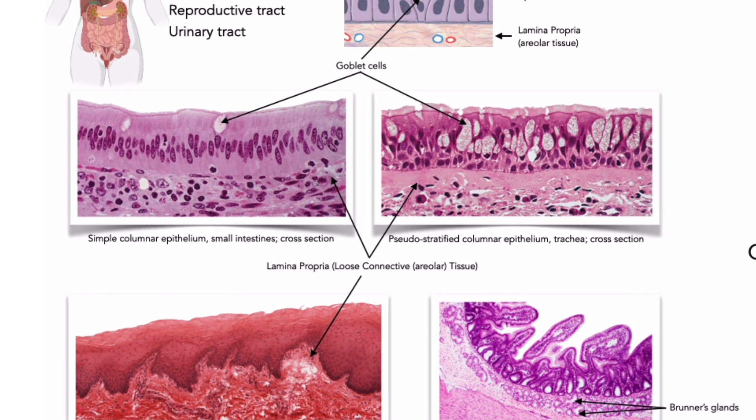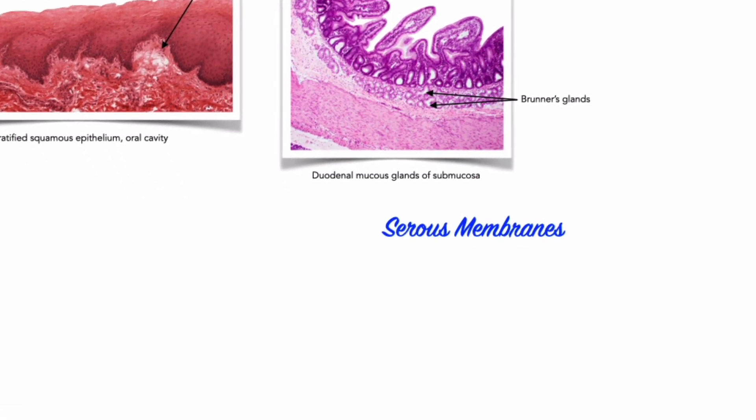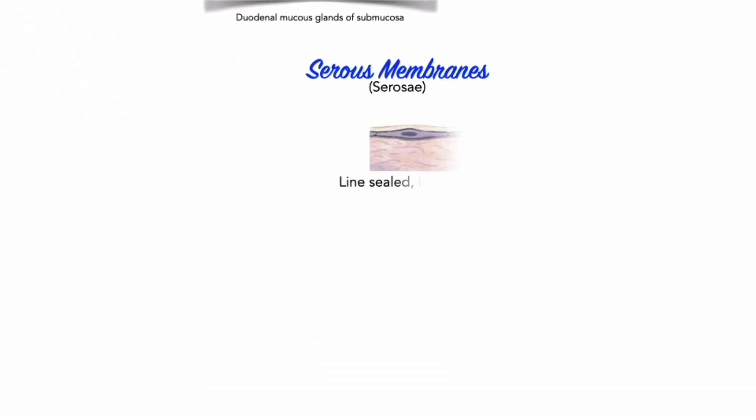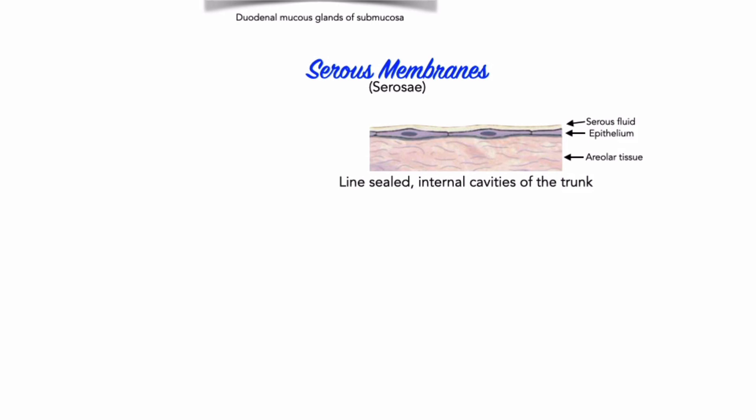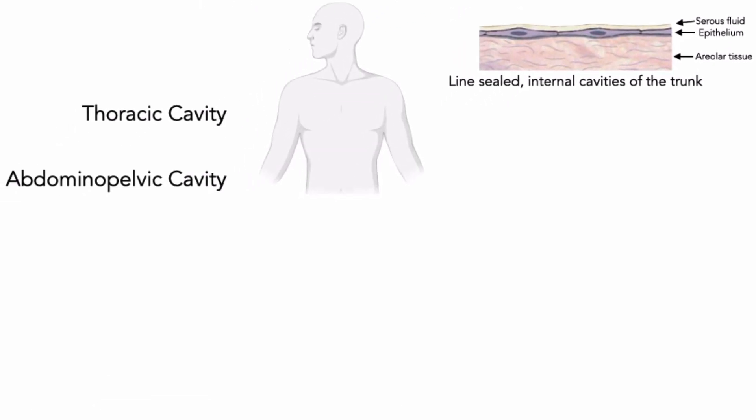Second, serous membranes. The serous membrane is a tissue membrane of loose areolar connective tissue lined with a simple squamous epithelium. Serous membranes line the sealed internal cavities of the trunk, which are not open to the exterior environment. These epithelia, derived from mesoderm, are sometimes called mesothelia. There are three serous membranes: two are found in the thoracic cavity and one is found in the abdominal-pelvic cavity.